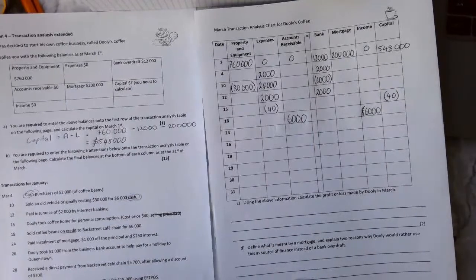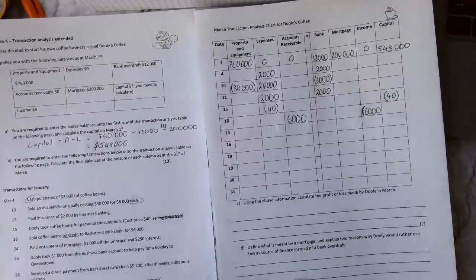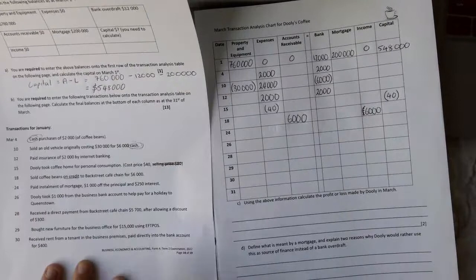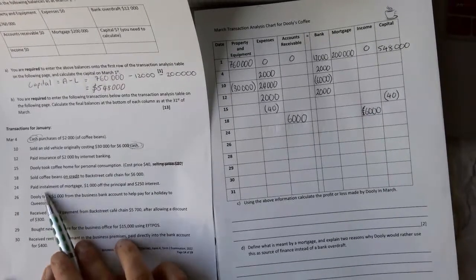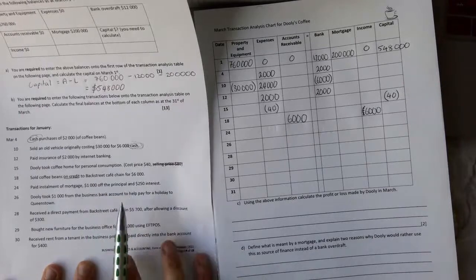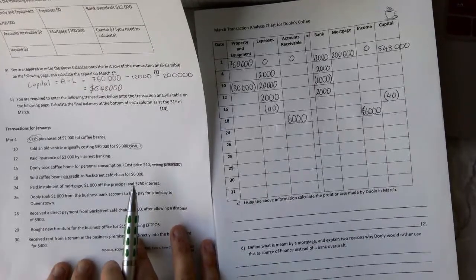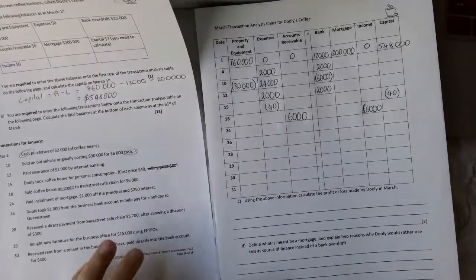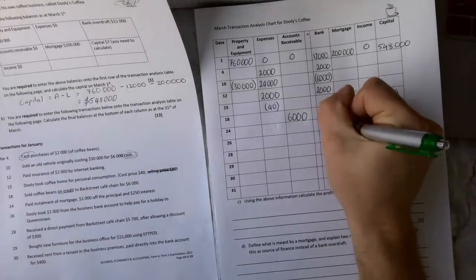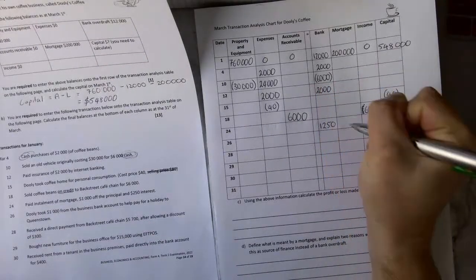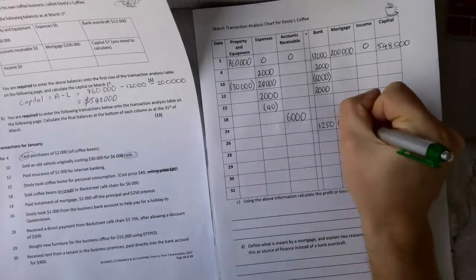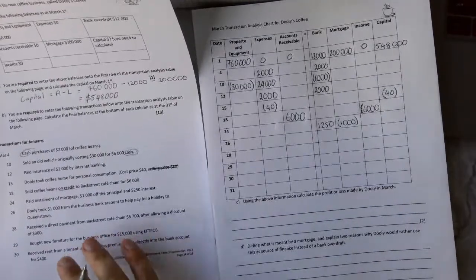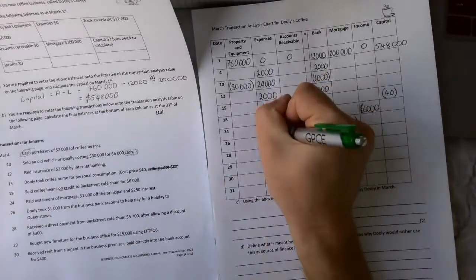We paid an installment of mortgage of $1,000 off the principal and $250 off interest. This is a quite tough one. So we're down here at question 24. Paid installment of mortgage $1,000 off the principal and $250 off interest. So the total bill comes to $1,250, and that's going to come into the bank account and we owe the bank more money. So that's going to increase. Then $1,000 is going to come off the mortgage. And the principal is another way of saying, the interest is another way of saying interest expense. So it's going to come into here.